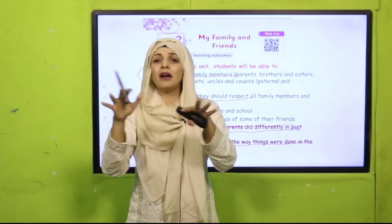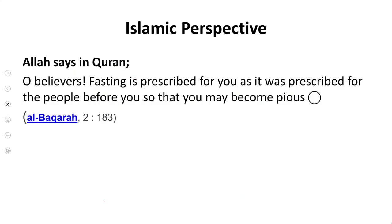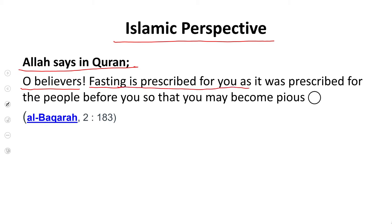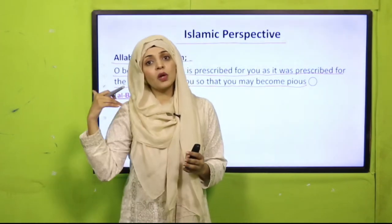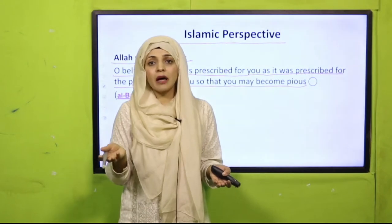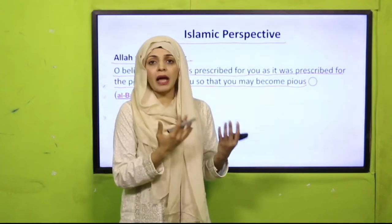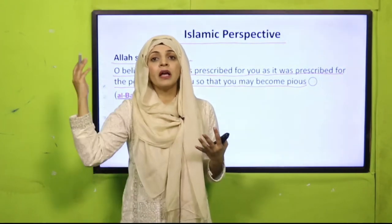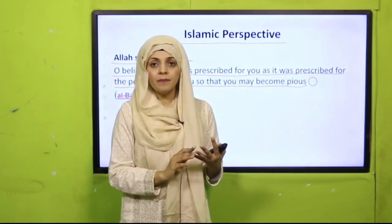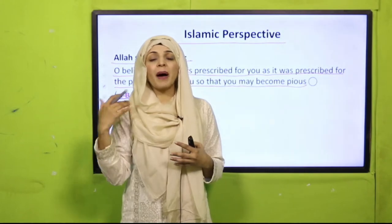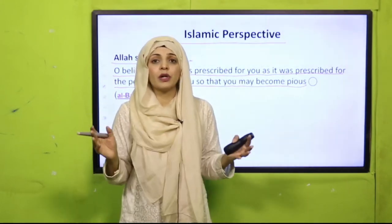Let's look at the Islamic perspective. Allah says in the Quran: 'Oh believers, fasting is prescribed for you as it was prescribed for the people before you, so that you may become pious.' People used to fast in old times and we still fast — we fast in Ramzan for 30 days. We fast from before Fajr till Maghrib. So in past life people fasted, and we still fast, but the timings were different.